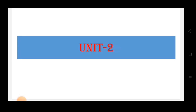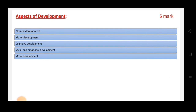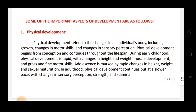Hello everyone. Today we shall discuss Unit 2 of Child Development and Pedagogy, Paper 1. We have already discussed Unit 1 in detail, and today we shall discuss Unit 2. There are five aspects of development to learn: physical development, motor development, cognitive development, social and emotional development, and moral development.